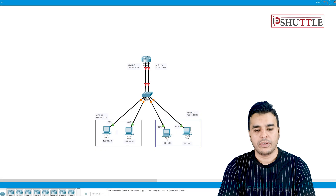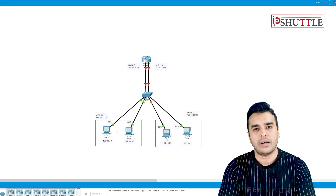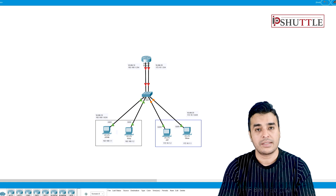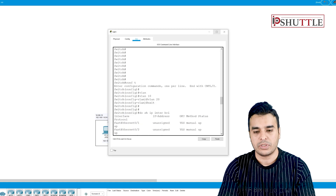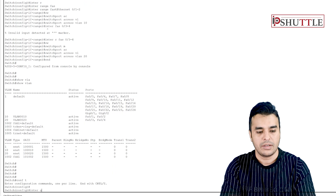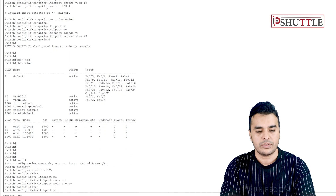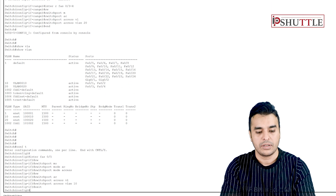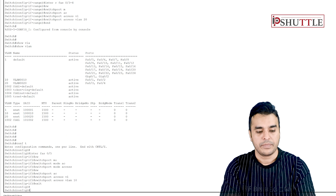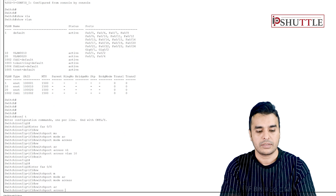Let's go to the third scenario. PCs and VLANs are already configured. We will configure the router with routed interfaces — one in VLAN 10 and one in VLAN 20. On the switch, configure interface FastEthernet 0/5 as switchport mode access, switchport access VLAN 10, and interface FastEthernet 0/6 as switchport mode access, switchport access VLAN 20.